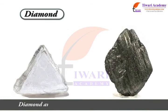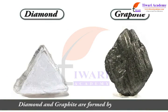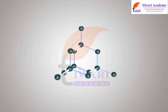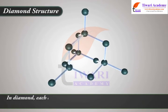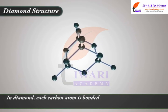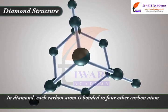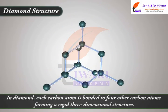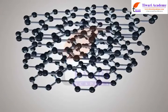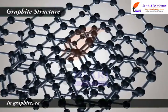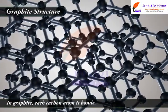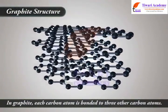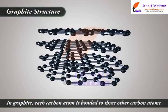Covalent molecules have strong bonds. Diamond and graphite are both formed by carbon atoms. In diamond, each carbon atom is bonded to four other carbon atoms, forming a rigid three-dimensional structure. In graphite, each carbon atom is bonded to three other carbon atoms.